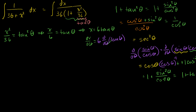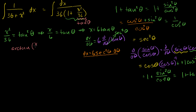So dx/dθ equals 6 times secant squared of theta. If we want dx, it equals 6 secant squared theta dθ. And of course we'll back substitute later, so we solve for theta: take the arctangent of both sides to get arctangent of x over 6 equals theta.